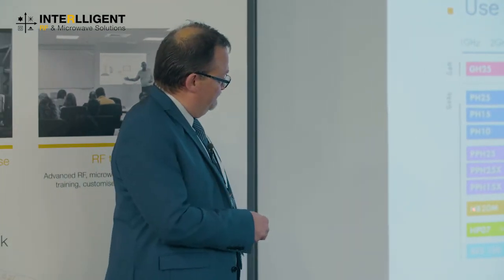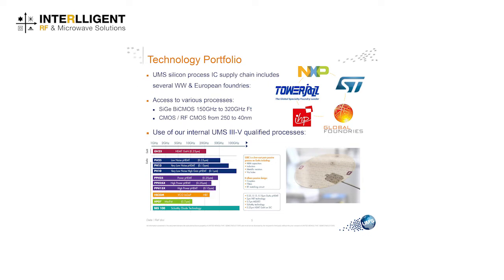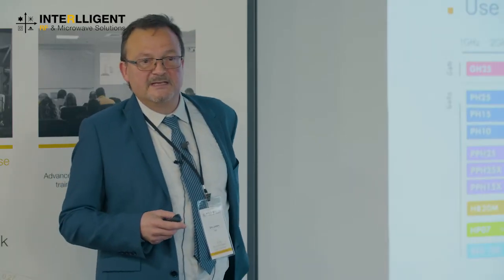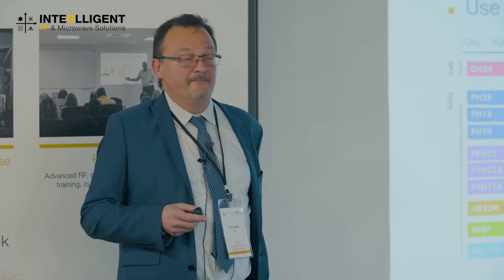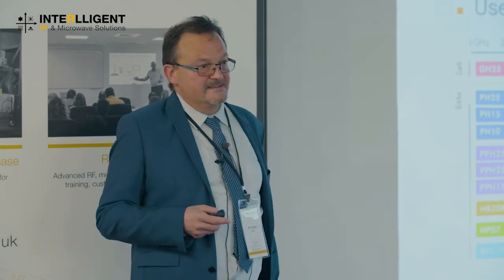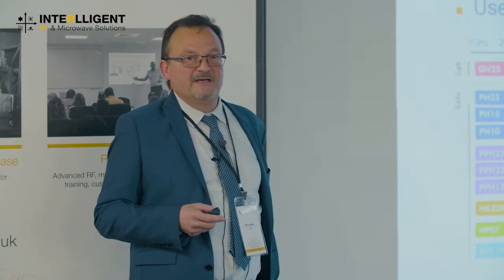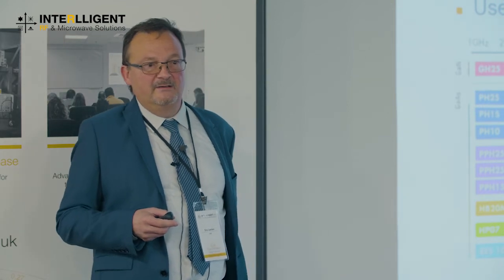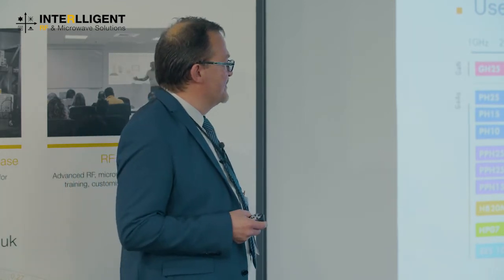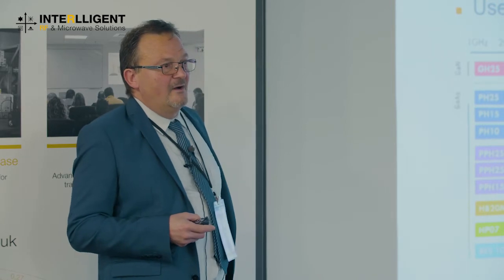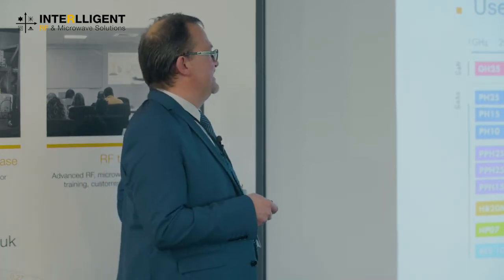For our internal 3-5 process, we have mainly GaAs pHEMT for low noise, GaAs pHEMT for power, HBT for VCO design strongly used in the automotive market, a MESFET process, and a Schottky diode process up to very high frequencies. For GaN, we released many years ago the 0.25 micrometer gate-length pHEMT GH25 in foundry mode, and we will release soon the GH15 for higher frequency applications.